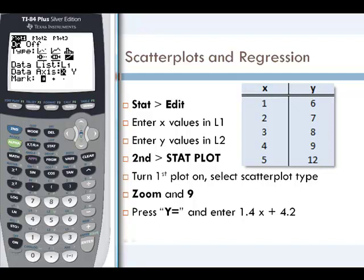We want to make sure our type is the scatter plot type. Scroll down to 'Type,' and the first option is the scatter plot with dots. Press enter to select that type.